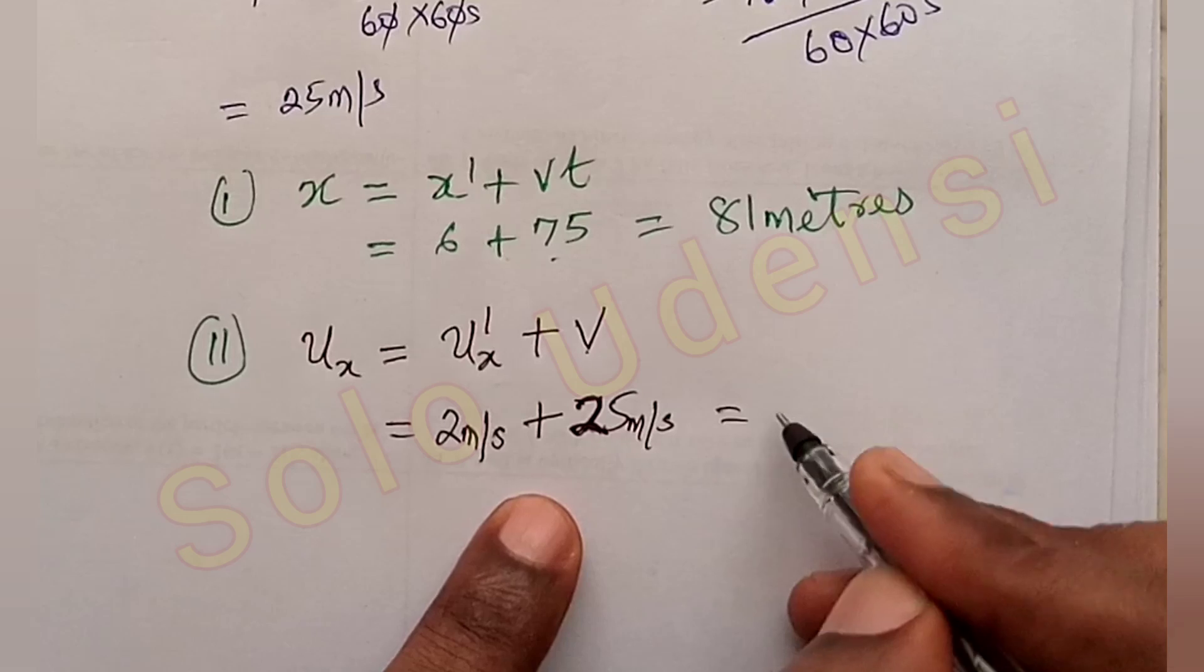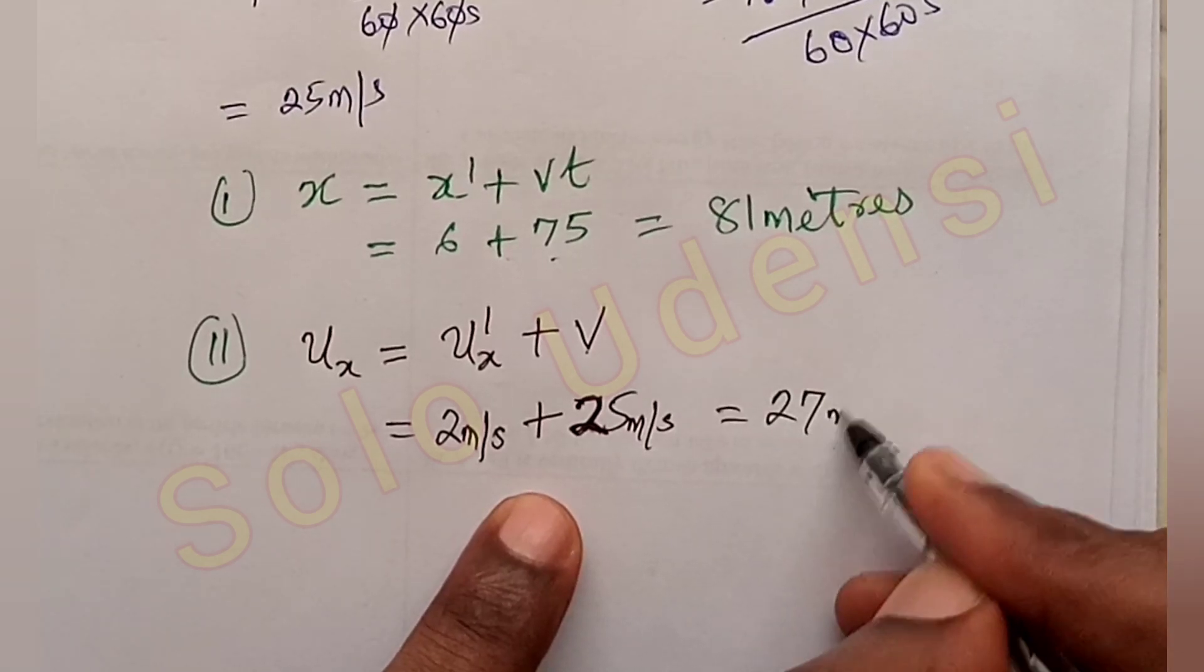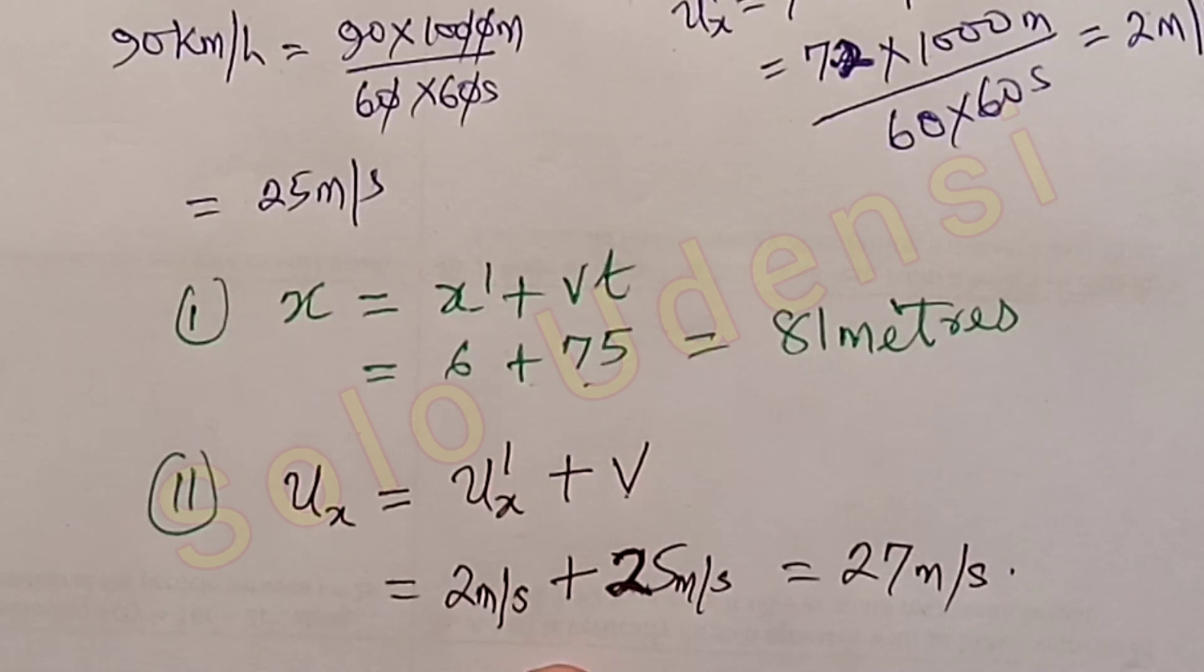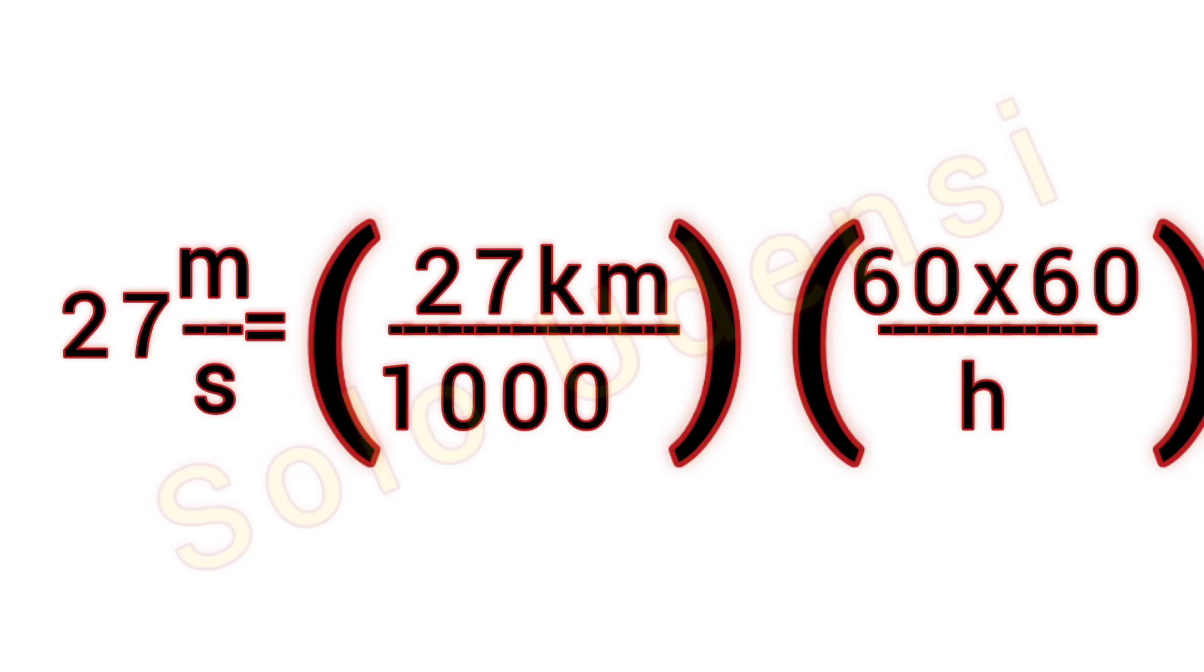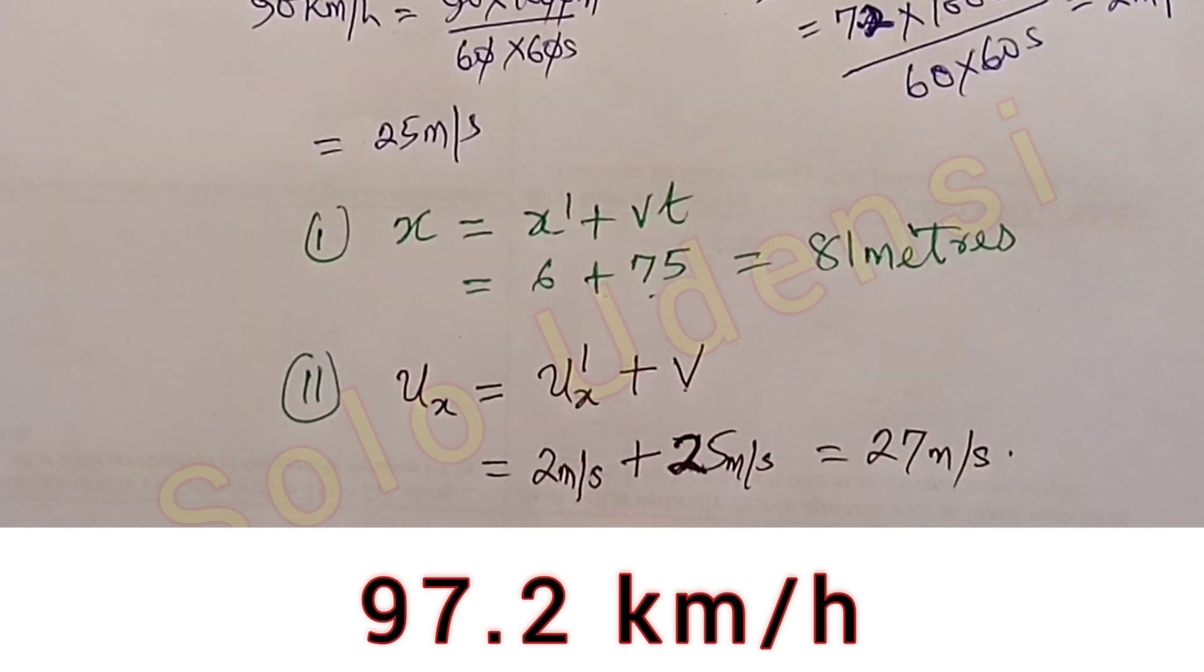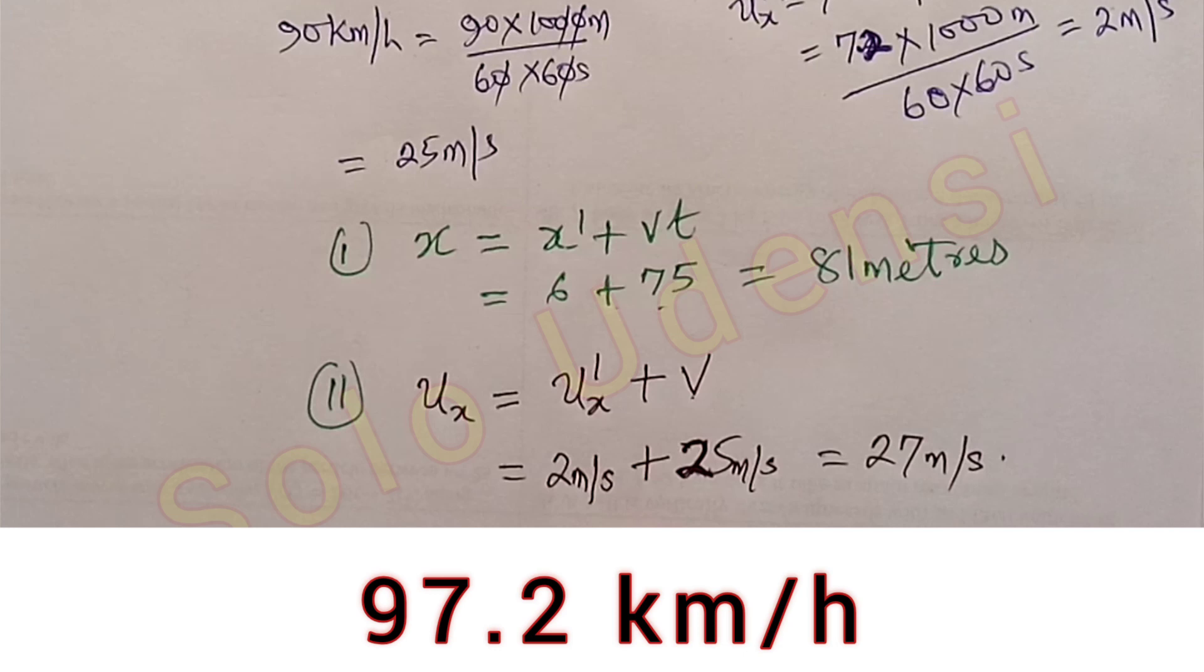So it is 27 meters per second. You can convert back to kilometers per hour, having it to be roughly 97.2 km per hour.